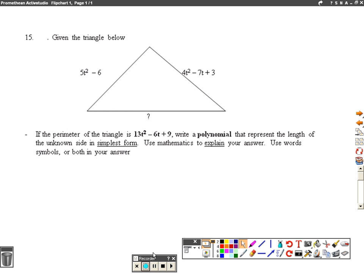Okay, so we're looking for the missing side of this triangle, right here. The first thing we want to do is identify the information we have. We have the perimeter, and we have the length of two sides.